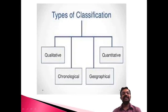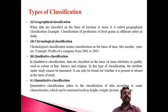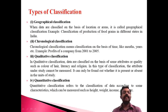There are different types of classification. Classification can be quantitative classification, qualitative classification, chronological classification, and geographical classification. The first category is geographical classification, where data is classified on the basis of geographical area — for example, India classified into North India and South India based on geographic location.